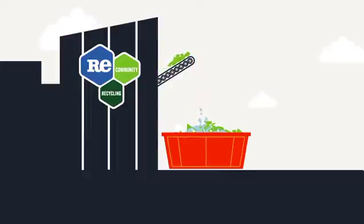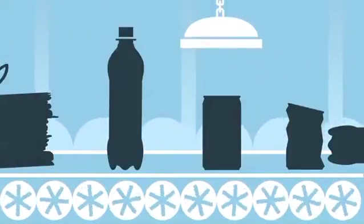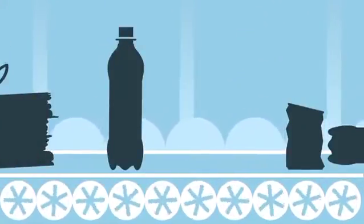At the same time, the rest of the resources continue along another conveyor belt, where steel and tin cans are removed using magnets.